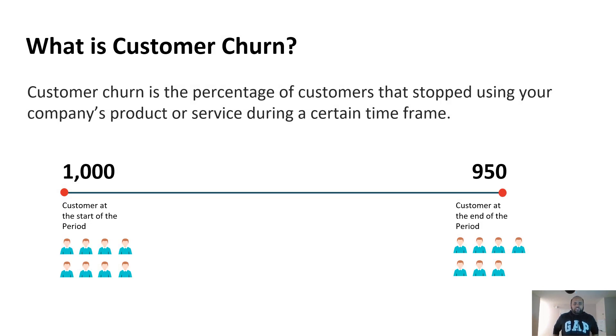So what is customer churn? Customer churn is the percentage of customers that you will lose to your competitors or they would go out of business. So if you had a thousand customers at the start of the period and at the end of the period you have 950 customers, you have a churn of 5%, 50 divided by a thousand.